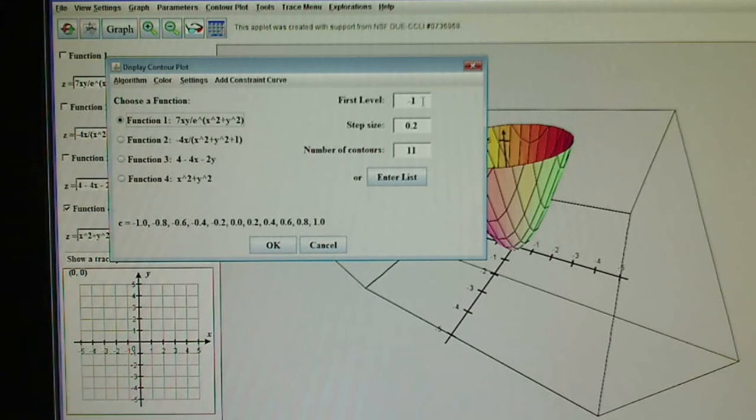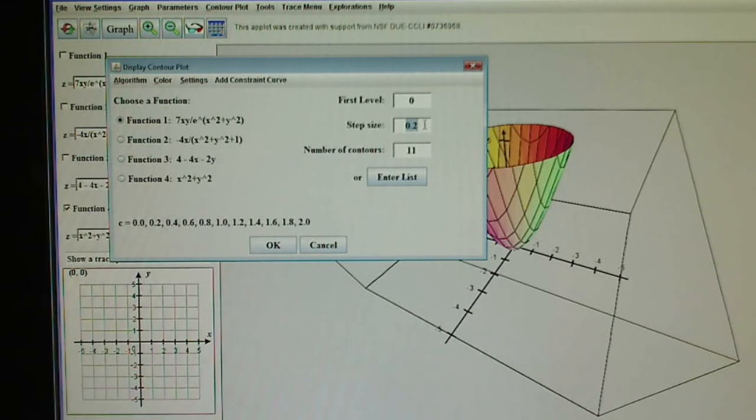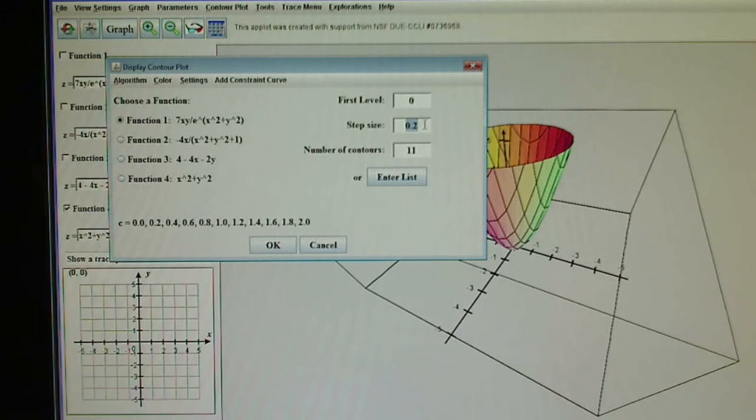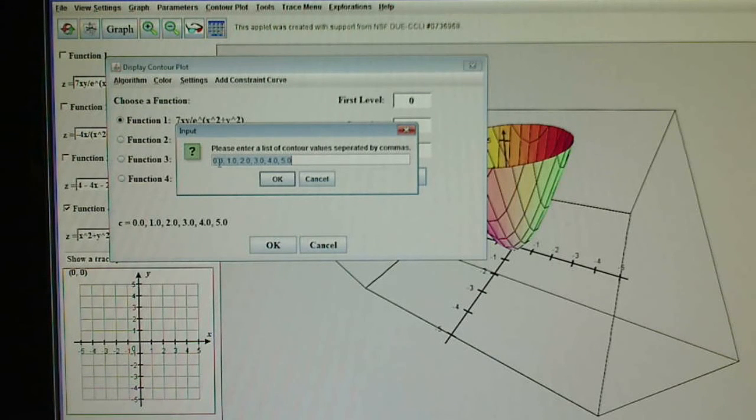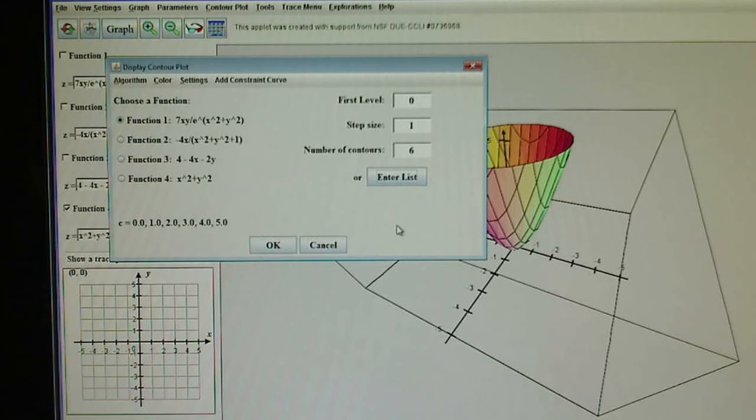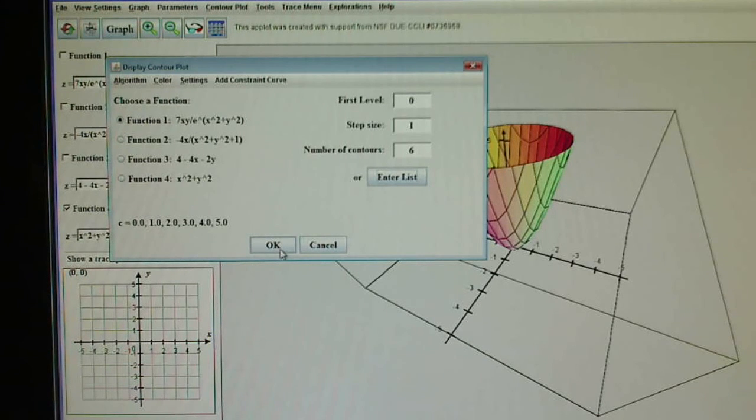They're going to do the first level minus one, which doesn't make sense because I know there isn't one down there. Let's do a step size bigger than 0.2. Let's just do one. Number of contours, let's do six. Or you can enter a list. There they are. You can see how they're a step size if you would like. But let's not do that. Let's do okay and see what it looks like.